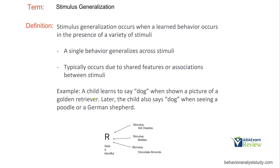Let's visualize stimulus generalization. It occurs when a learned behavior happens in the presence of a variety of stimuli. For example, we have multiple stimuli: hot Cheetos, Skittles, and chocolate almonds. All three evoke the response of grabbing a handful. The behavior was originally taught in the presence of hot Cheetos, but now when the learner sees other food items, they grab a handful as well. The response isn't changing — it's just occurring in the presence of a variety of stimuli. A single behavior is generalizing across stimuli.